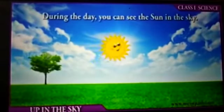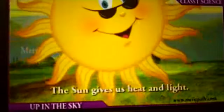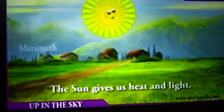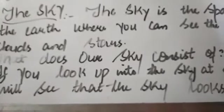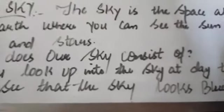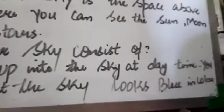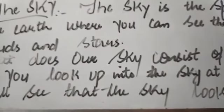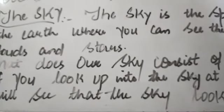During the day we can see the sun in the sky. Because of the sun our days are hot — it increases heat and light as it is a huge ball of fire. If you go out in the daytime, you will see that the sky is blue in color.